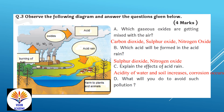Explain the effects of acid rain. Acid rain increases the acidity of water and causes corrosion. To avoid such pollution, we need to properly dispose of waste and control pollution.